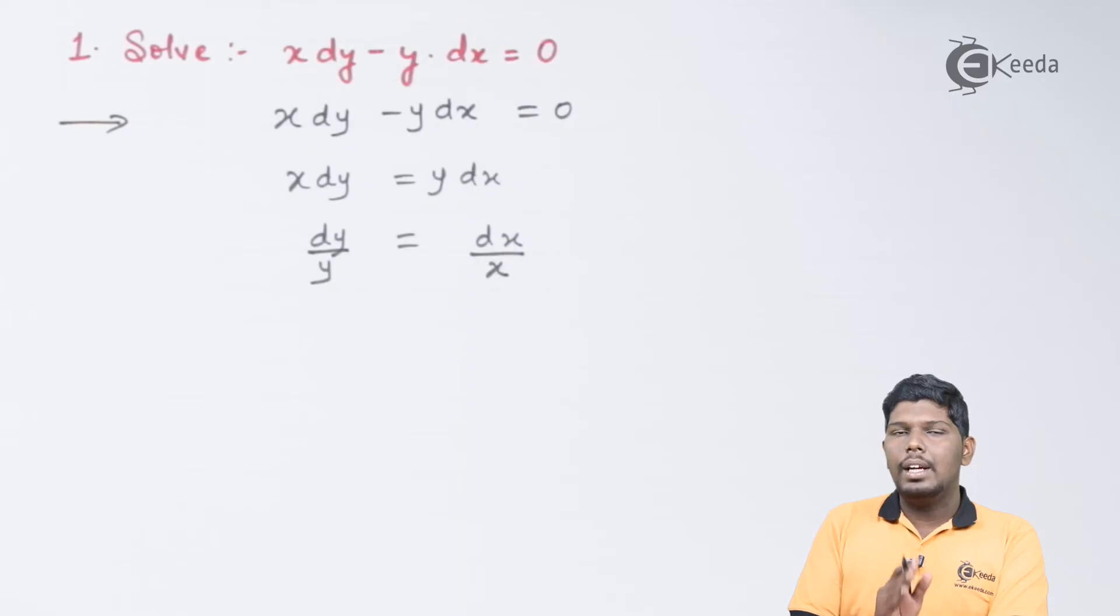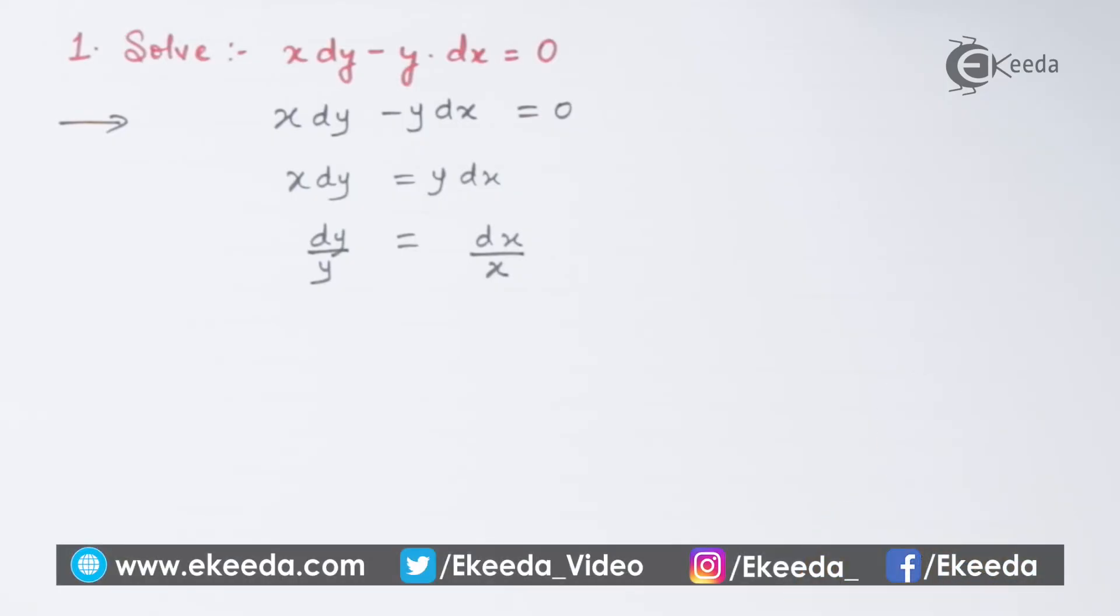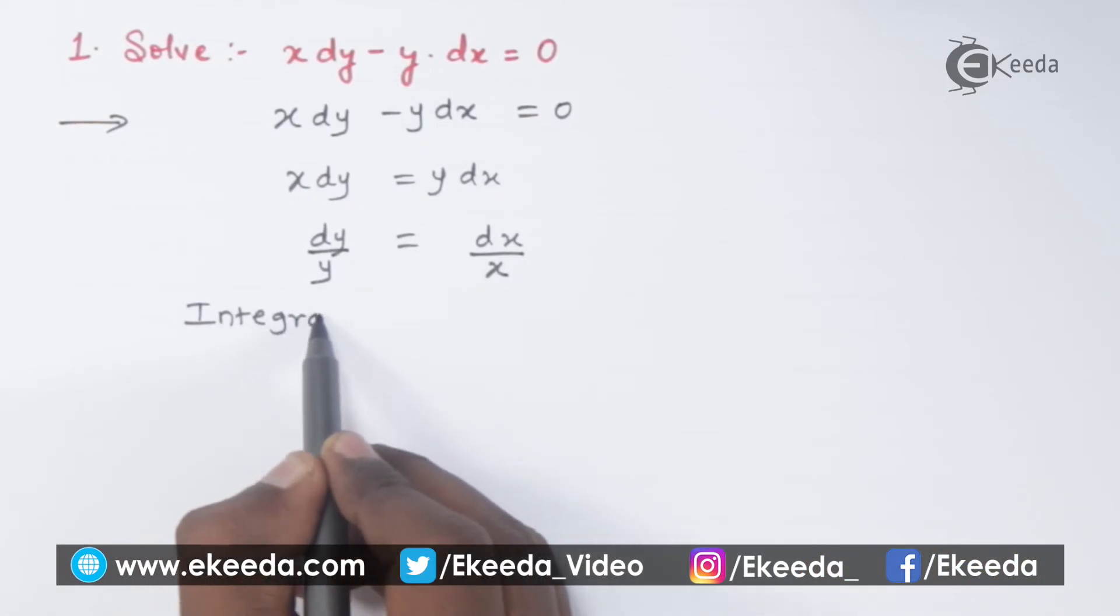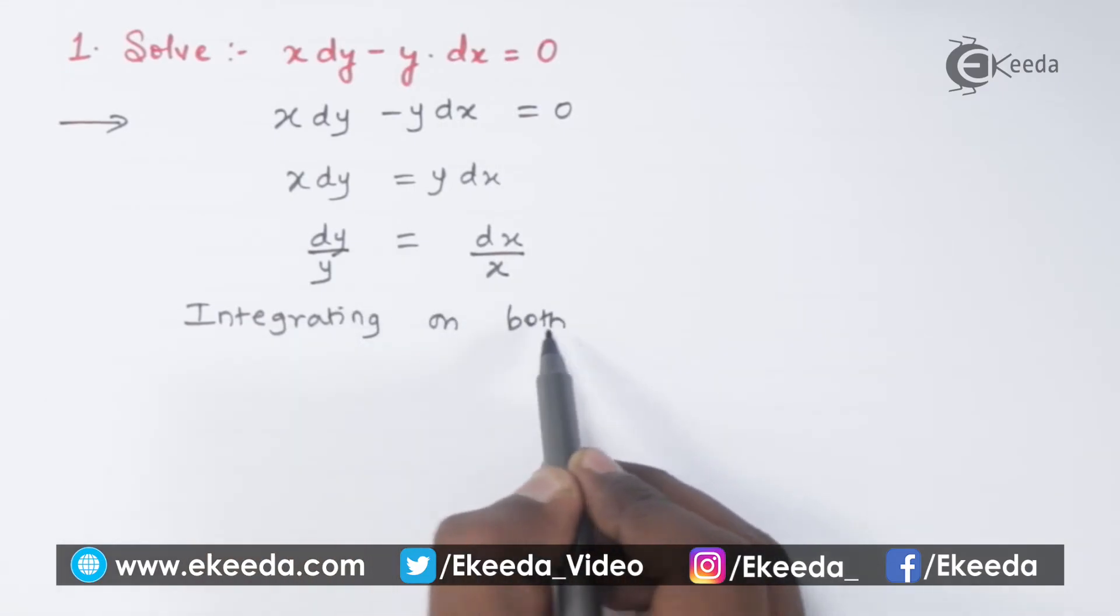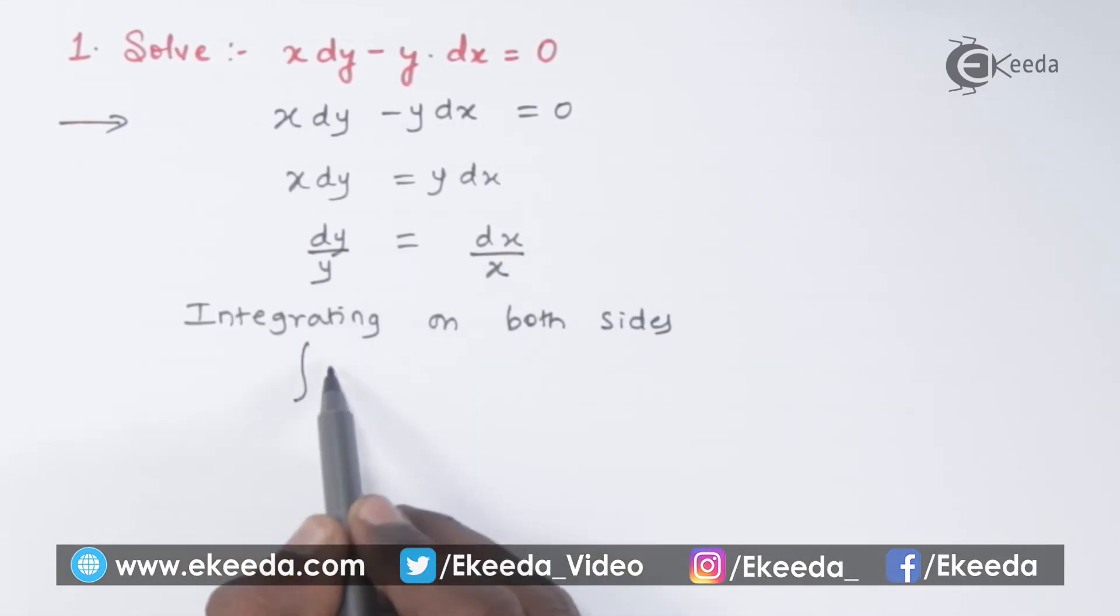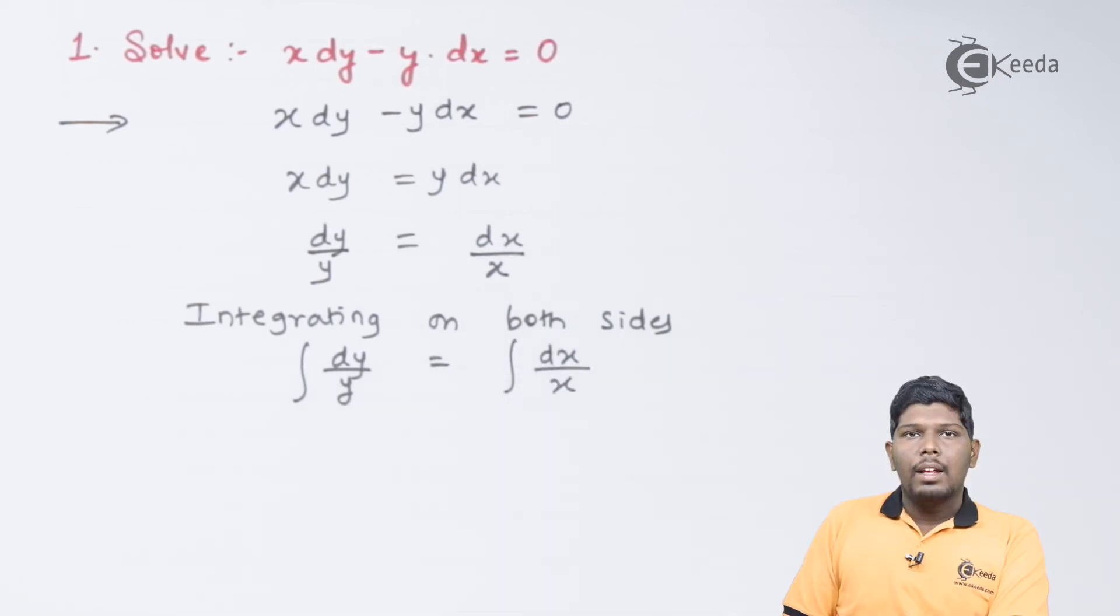So x will be divided on the right-hand side and y will be divided on the left-hand side. Now, as you can see, we have perfectly separated the variable on left-hand side and right-hand side. After this step, the next step will be integrating on both sides.